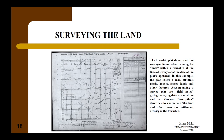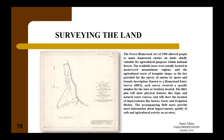In addition to township surveys, there were surveys made under the Forest Homestead Act of 1906, which allowed entries on lands chiefly valuable for agricultural purposes within national forests. The available areas were usually in unsurveyed mountainous regions with agricultural tracts of irregular shape, so the law provided for survey by metes and bounds description. Known as a homestead entry survey or HES, each survey received a specific number for the state or territory. The HES plat shows physical features like slope and natural water courses, and improvements such as houses, barns, and irrigation ditches. Accompanying field notes provide more information about improvements, soil quality, and agricultural activity.